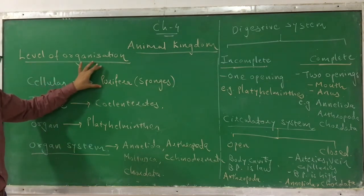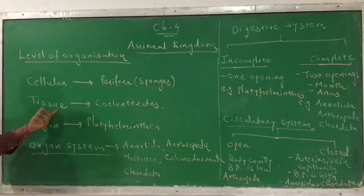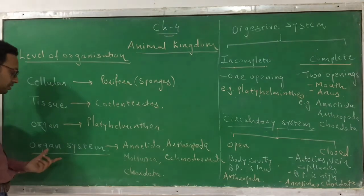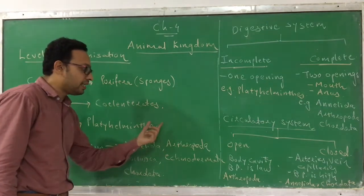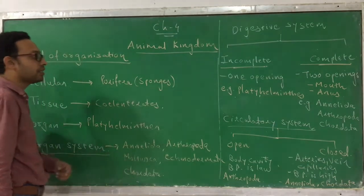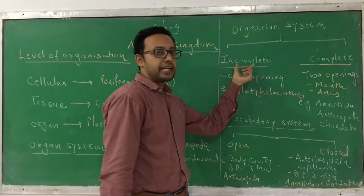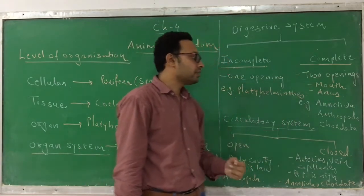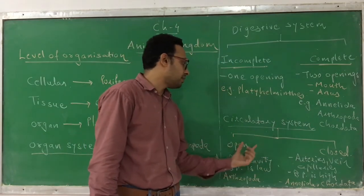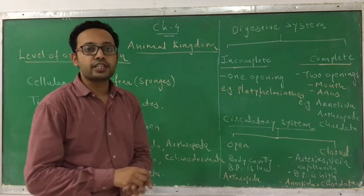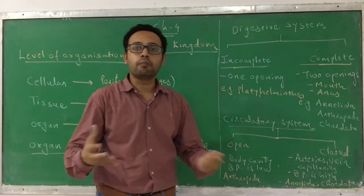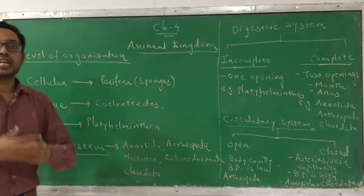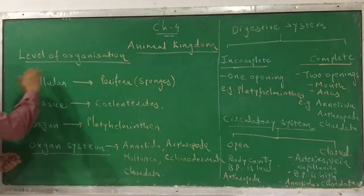Let me repeat so you can remember: cellular level of organization in Porifera; tissue level of organization in Coelenterata; organ level of organization in Platyhelminthes; organ system level of organization in Annelida, Arthropoda, Mollusca, Echinodermata, and Chordata. Two kinds of digestive system — incomplete and complete; incomplete has just one opening, complete has two openings. Circulatory system — open and closed; in closed they flow in a closed system, in open they flow in body cavities. This is the first criteria by which animals can be classified, called the level of organization.